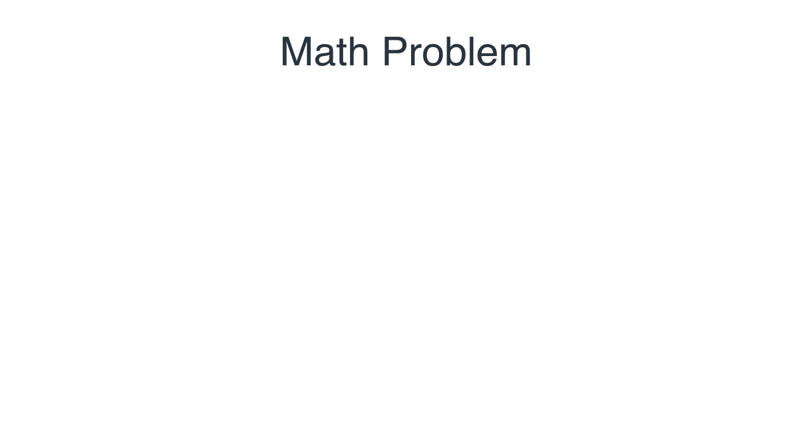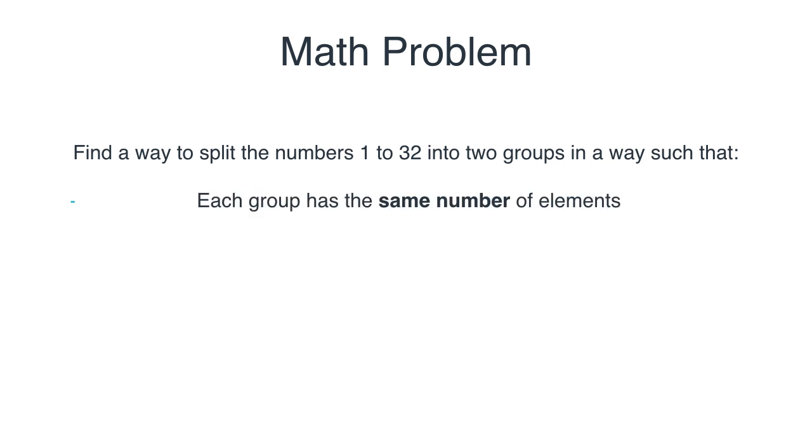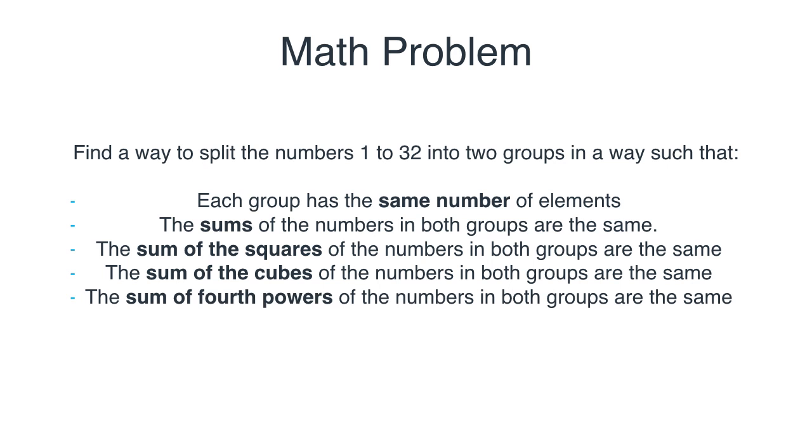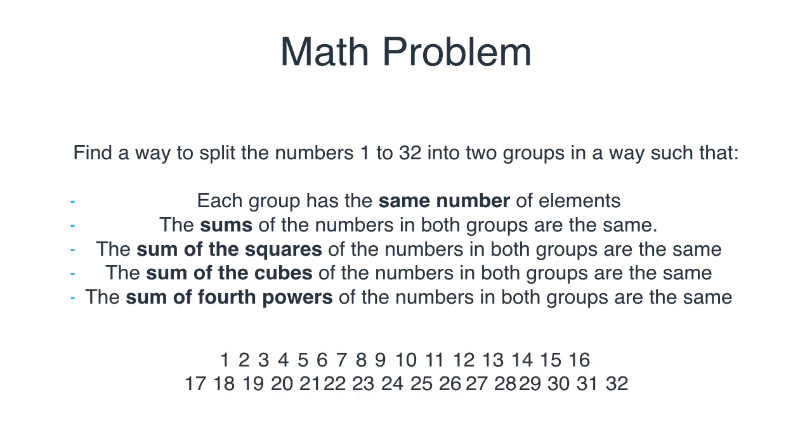So let's fast forward some years later, and I was in high school taking a math competition, and I found the following problem. The problem says, find a way to split the numbers 1 to 32 in two groups in such a way that the following conditions hold. Each group has the same number of elements. So each group will have 16 elements. The sums of the numbers in both groups are the same. Also, the sums of the squares of the numbers in both groups are the same. The sum of the cubes of the numbers in both groups are the same. And the sum of the fourth powers of the numbers in both groups are the same. So this looks quite hard, because there's many ways to split the numbers 1 to 32 in two groups. But that's a lot of conditions to be satisfied.